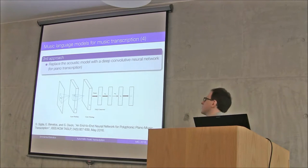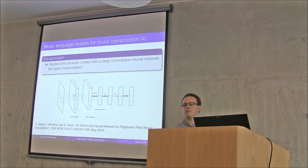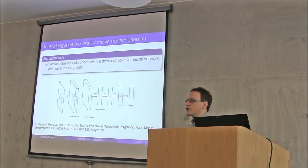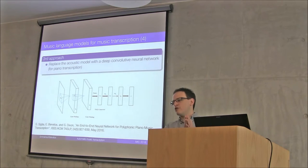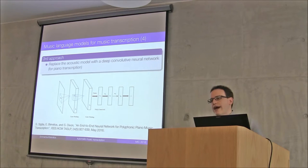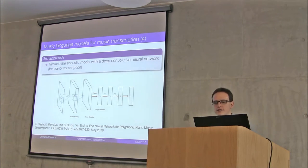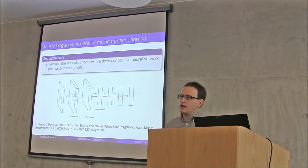A more recent paper replaced the acoustic model with a deep convolutional neural network. The advantage of a convolutional neural network is that it can take into account the temporal context in the acoustic signal — the temporal evolution of a note — and join that with the language information. The system was evaluated on piano music and the results were very promising when integrating the acoustic model with the language model.